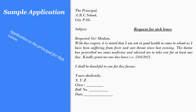Now another sample application. Write an application to the principal for sick leave. The same format for application writing applies. The Principal, ABC School, City PAG, full stop. Then skip one line. Subject: Request for Sick Leave. Skip one more line. Respected Sir or Madam, then comma. 'With due respect, it is stated that I am not in good health to come to school, as I have been suffering from fever and sore throat since last evening. The doctor has prescribed me some medicines and advised me to take rest for at least one day.' Kindly grant me one day's leave, that is 5th April 2021.